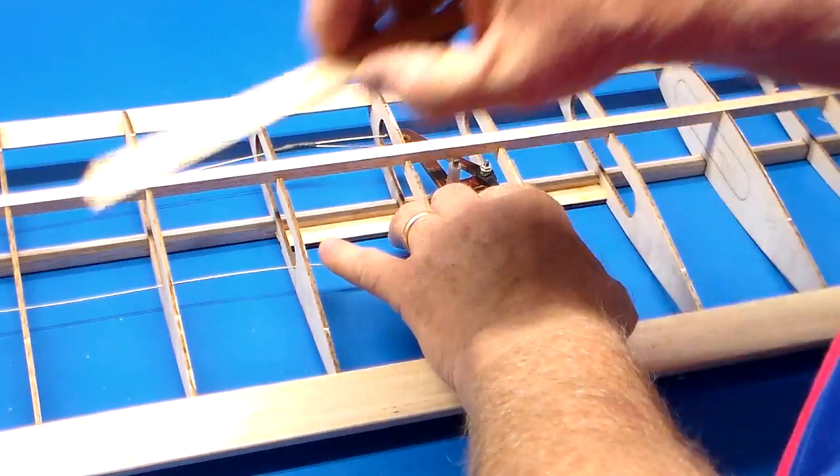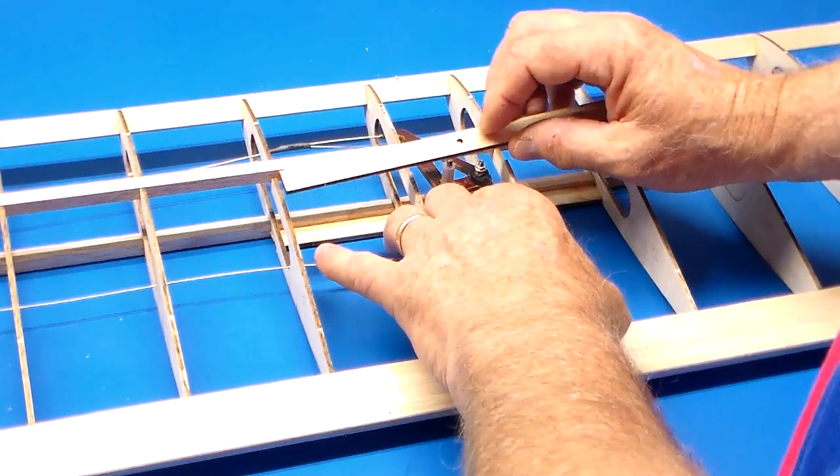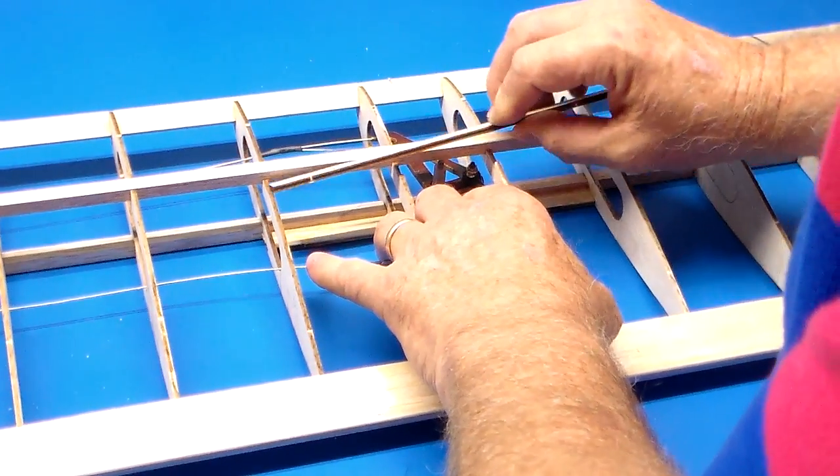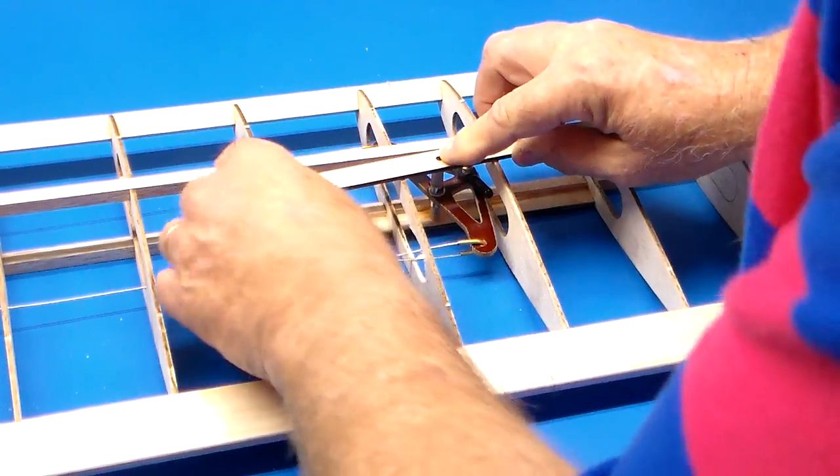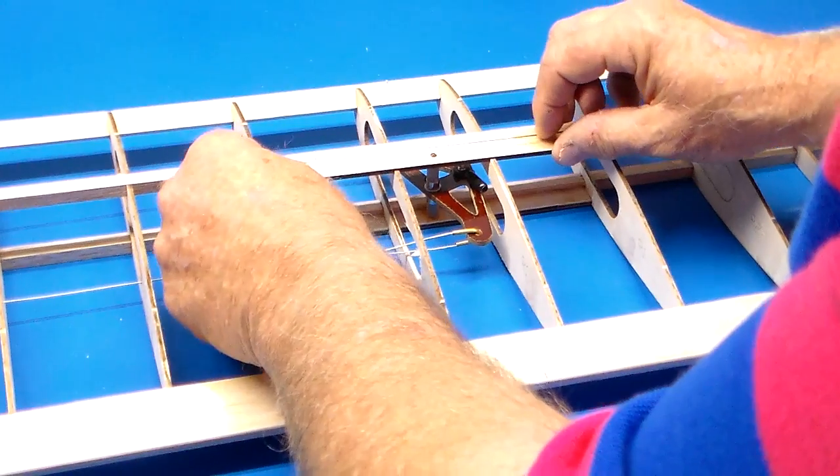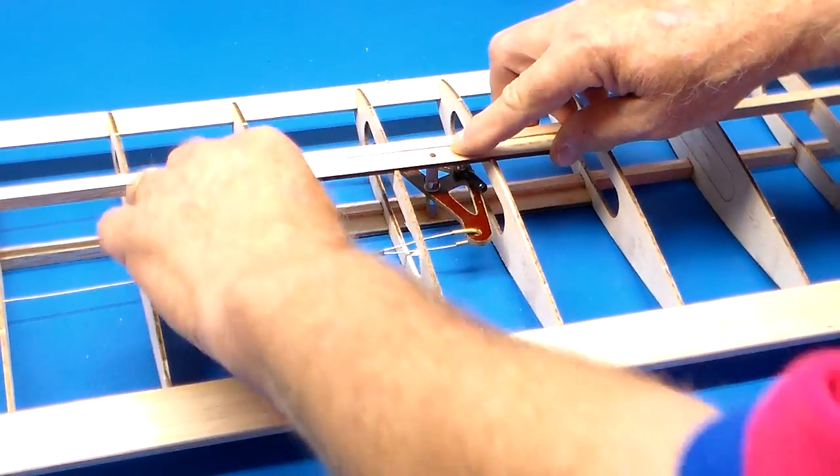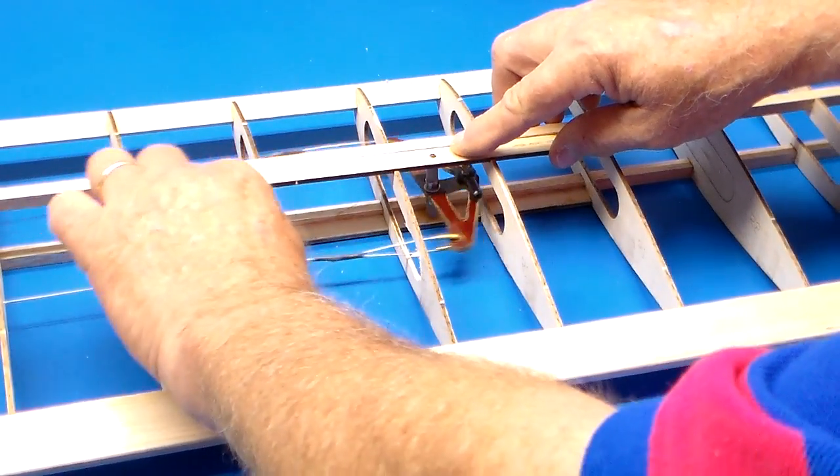You take your top part, your top plate, and you get it centered over the music wire, drop that down, and then you put it down into the recesses of the ribs and glue it in place. Then your bell crank is captured and suspended.